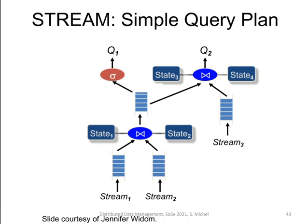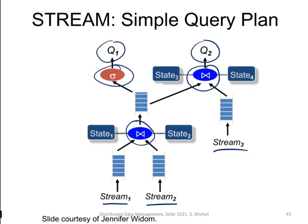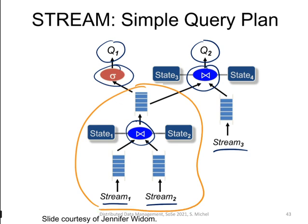Here is an illustration of a simple query plan in a stream system. We have three streams coming in, queues between individual operators, join operators, and a selection operator, with data flowing from the bottom to the top to produce query results. This example also shows that two queries, Q1 and Q2, share a substantial amount of processing — the join between two streams is shared across both queries. Only an additional selection is needed for Q1, and for Q2 there is a further join with stream 3.